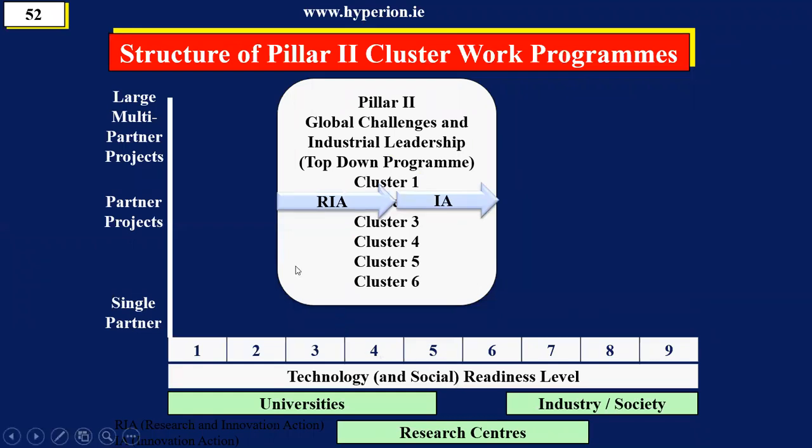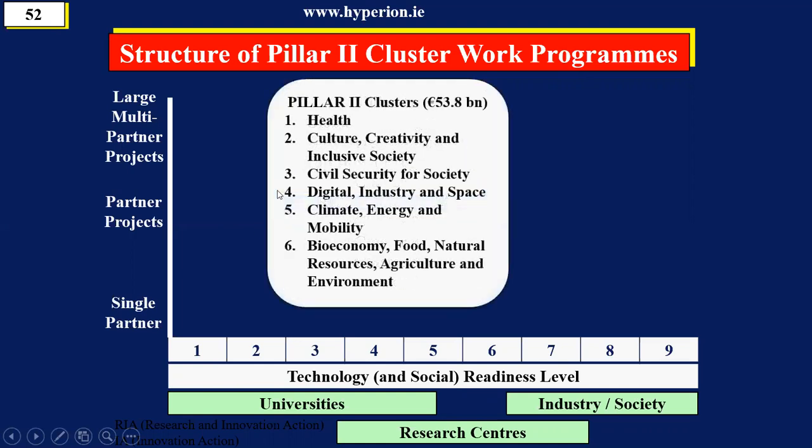You need a consortium to apply. There are six clusters, and the total budget is $53.8 billion. When you look at the documents, each of these clusters has a work program, and they vary in size from 300 up to 500 pages.